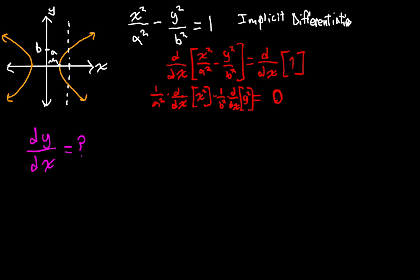Let's evaluate these. The first part is going to be 1 over a squared times the derivative with respect to x of x squared, which is just going to be 2x. Then we're subtracting 1 over b squared times the derivative with respect to x of y squared, and we're going to break this up with the chain rule because we have an outer expression and an inner expression. We've established that y is not a traditional function of x, even though y values can be calculated based on x — it just doesn't pass the vertical line test.